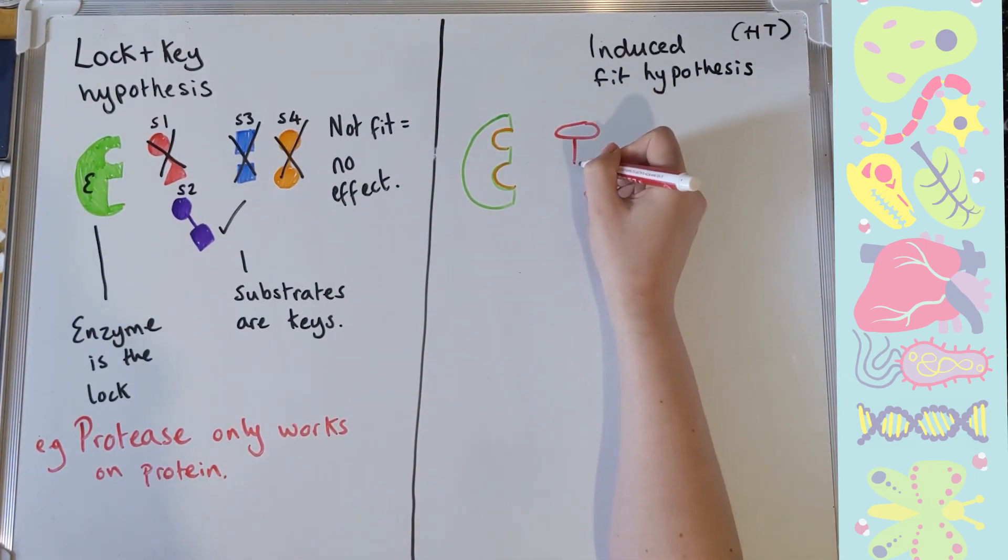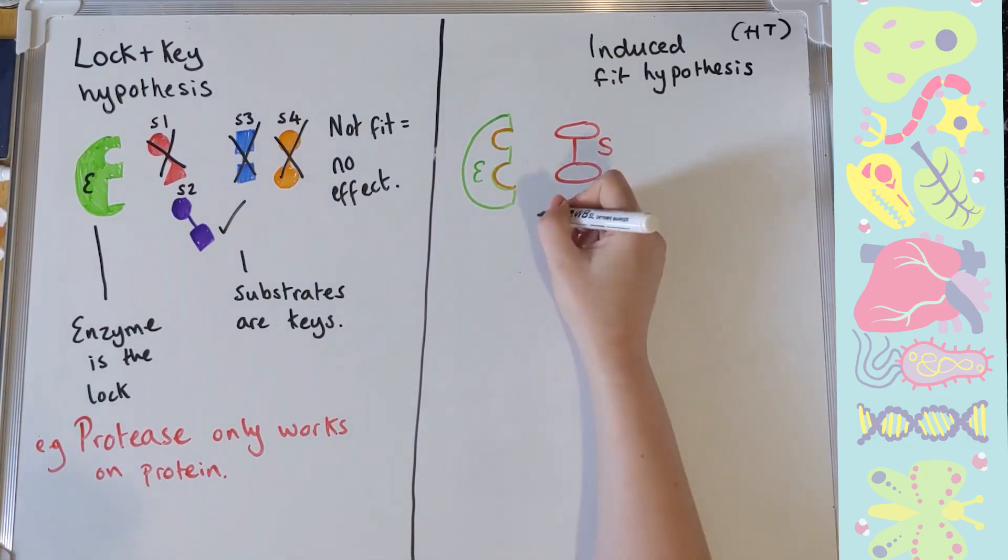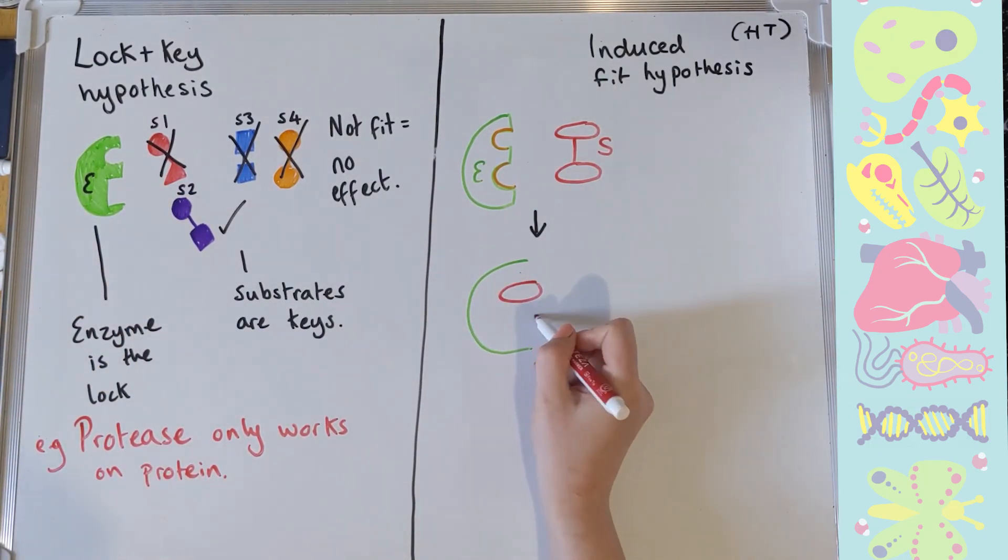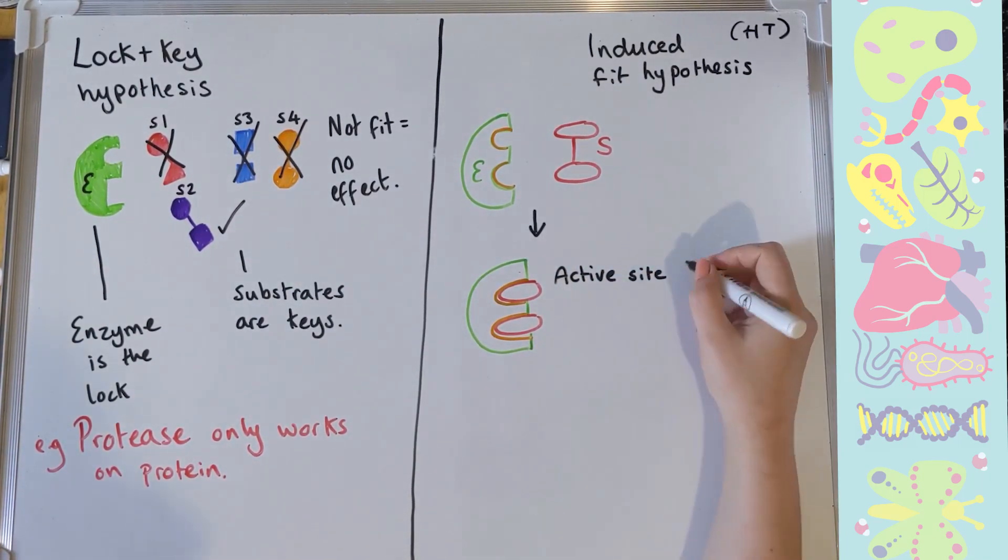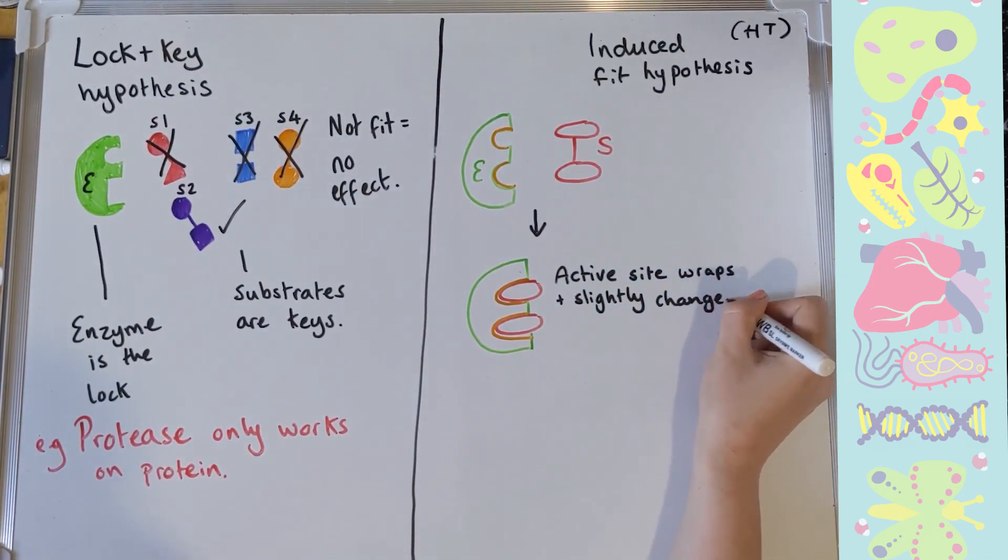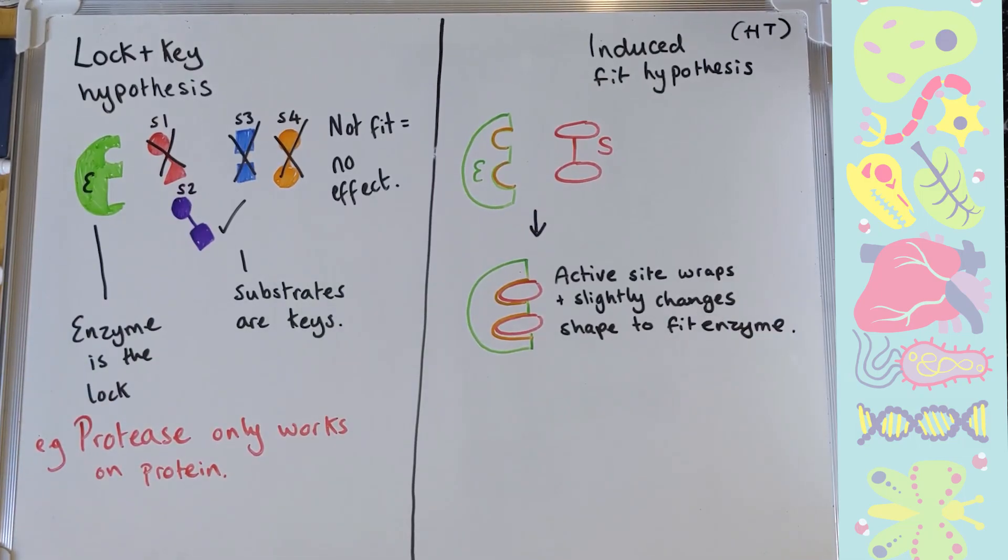The induced fit hypothesis is slightly different. In this instance, we have an enzyme still and a substrate still, but this time, the active site can actually stretch or warp to fit the substrate if the shape is similar enough. The way I like to think about induced fit hypothesis that makes sense to my brain is like a glove.